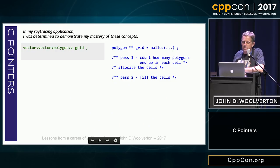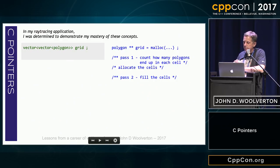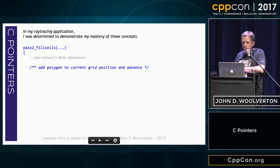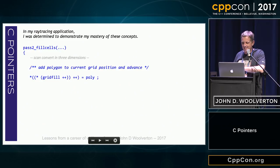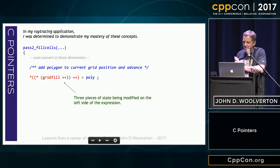I was running a ray tracer, and I had something that was essentially a vector of vector of polygons, but it was malloc and pointers to pointers. I went through and counted how many polygons ended up in each cell of my grid. I allocated all the cells, and then I had to fill them in. The code did a whole bunch of three-dimensional math, scan converting the polygon, and at the end it needed to fill the polygon pointers into this data structure. So using all my Jedi powers and everything I'd learned about pointers, I wrote that — three pieces of state being modified on just the left-hand side.